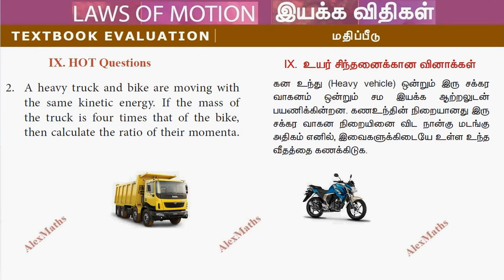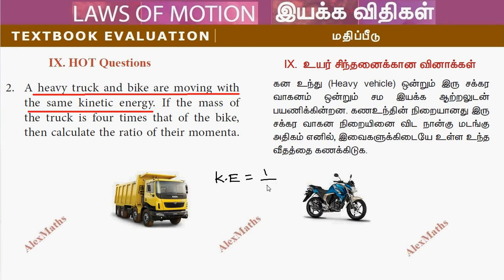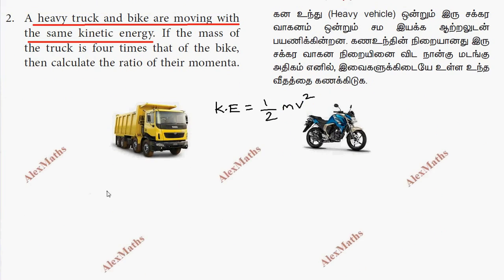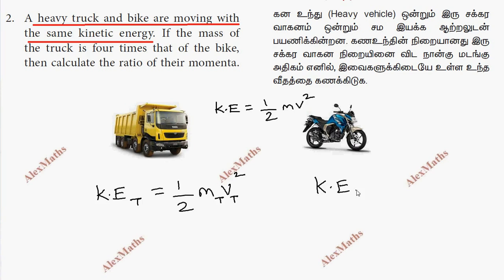Hi students, this is Alex here. A heavy truck and a bike are moving with the same kinetic energy. The kinetic energy formula would be: KE equals half mv squared. So kinetic energy of the truck is half mt vt squared, and kinetic energy of the bike is half mb vb squared.